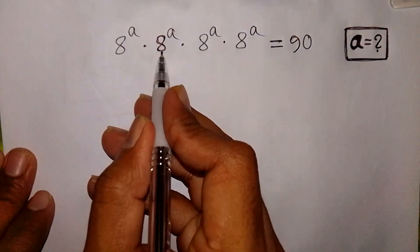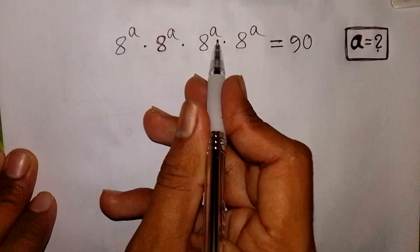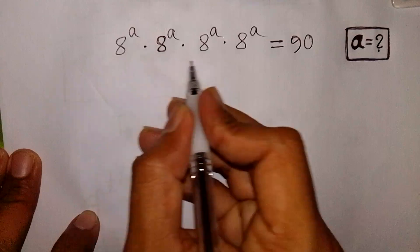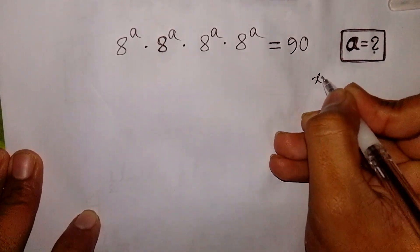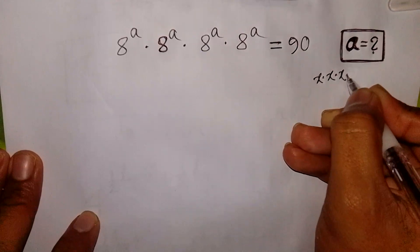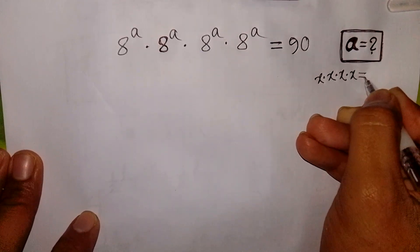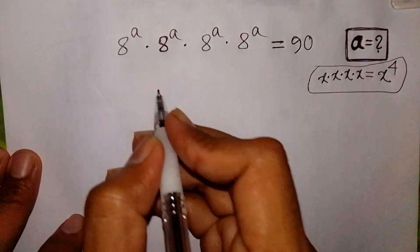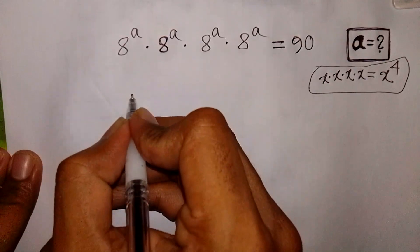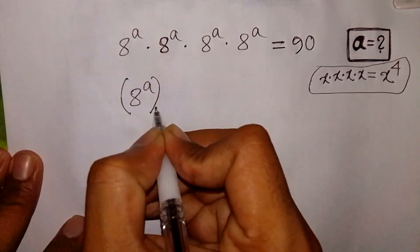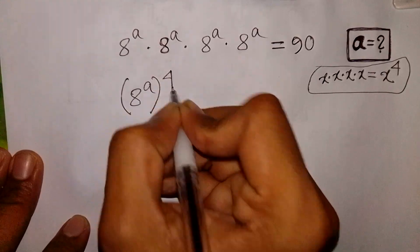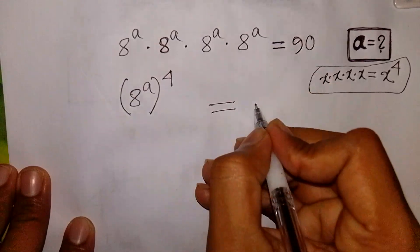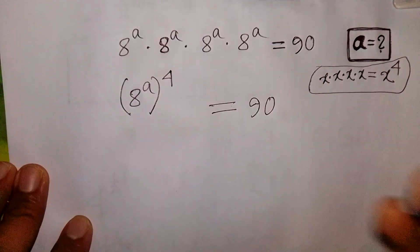8 power A times 8 power A times 8 power A times 8 power A is equal to 90. Find the value of A. In the form of x times x times x times x equals x to the power 4, so it will be 8 power A, bracket to the power of 4, equal to 90.